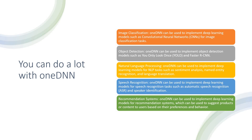Speech recognition is also possible — you can build speech recognition applications using oneDNN to implement deep learning models for tasks like automatic speech recognition and speaker identification. Recommender systems can also be built; you can suggest products and content to users based on their preferences and historical usage. So, image classification, object detection, NLP, speech recognition, recommender systems, and more can all be done with oneDNN.